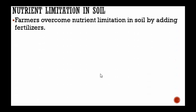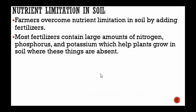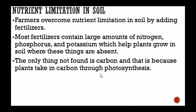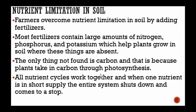Farmers overcome nutrient limitation in soil by adding fertilizers. Most fertilizers contain large amounts of nitrogen, phosphorus, and potassium, which help plants grow in soil where these are absent. The only thing not found in fertilizer is carbon, because plants take in carbon through photosynthesis — there's no need to add it. All nutrient cycles work together, and when one nutrient is in short supply, the entire system shuts down.